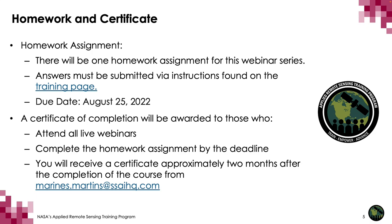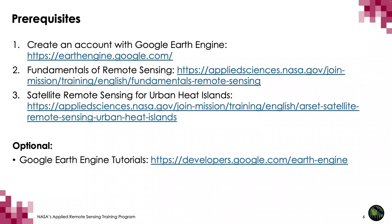You will receive a certificate approximately two months after the completion of the course from Marinus Martin. The following are prerequisites for today's training. If you wish to use today's lab time and work with the JavaScript code we're providing to calculate urban heat islands, you'll need to register an account with Google Earth Engine. Once you've registered an account using a Gmail or .edu email, you'll have access to the shared repository for accessing the scripts from the training. The other prerequisites are the fundamentals of remote sensing course and the satellite remote sensing for urban heat islands course presented by ARSET in 2020.